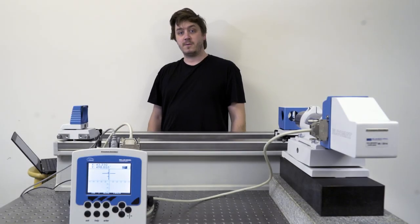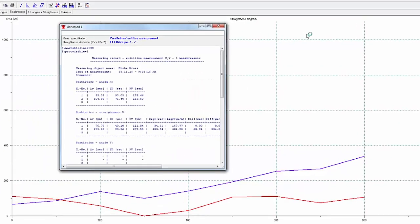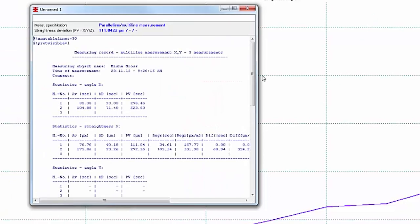Now that we've completed the measurement, we can see on our screen a graph of the straightness profiles of both rails, as well as numerical data on their straightness and parallelism.